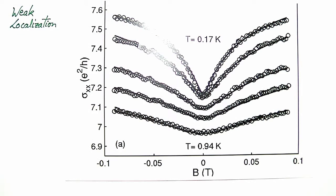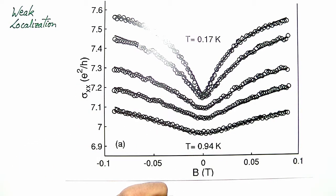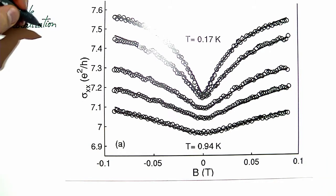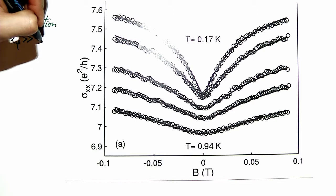In this exercise we are given a measurement of conductivity as a function of magnetic field and temperature, and we are asked to say as much as we can about the underlying 2D electronic system. We observe that there is a minimum in conductivity at zero magnetic field, which is characteristic of weak localization. So we can make the general statement that this system is diffusive and coherent with a coherence length Lφ significantly larger than the elastic mean free path Le.